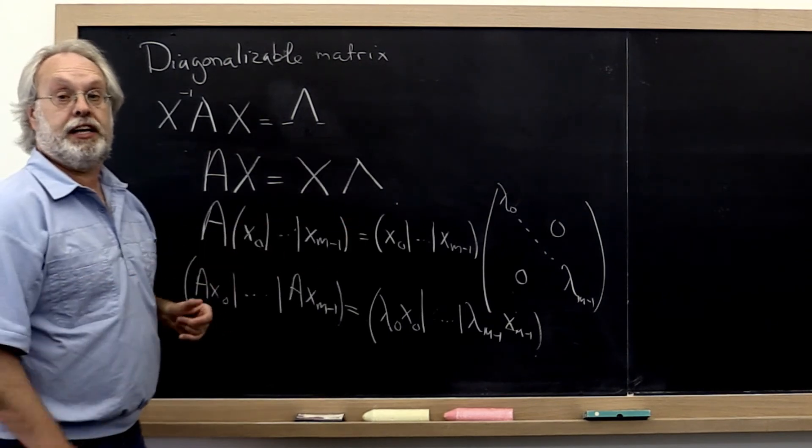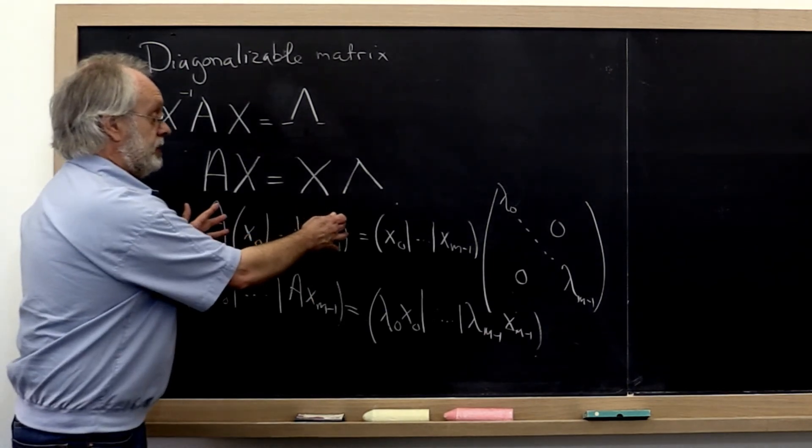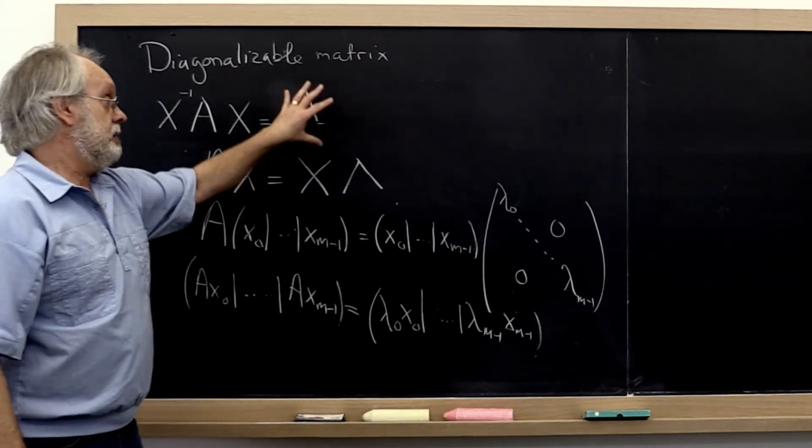If we have M linearly independent eigenvectors, we can make them the columns of matrix X, and then we have exactly the X that diagonalizes A.